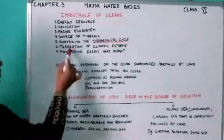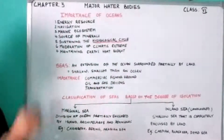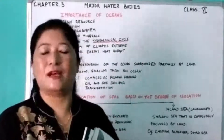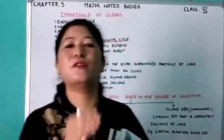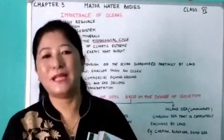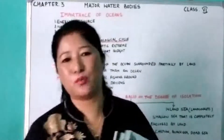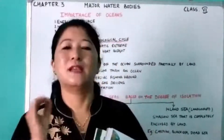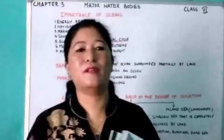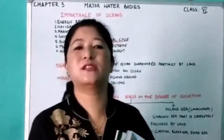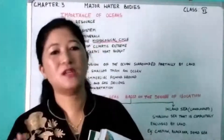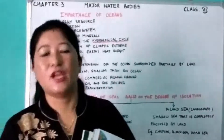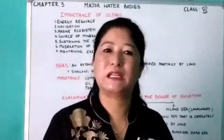Number six: moderation of climatic extremes. Oceans prevent the extremes of climate. Places located near a water body experience a moderate, equable, or maritime climate — that is, neither very hot nor very cold. This is due to the influence of the water body, so coastal areas experience a moderate climate.